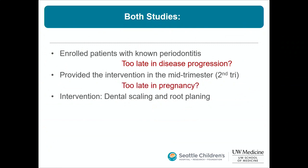Maybe intervention should have been in the first trimester, or even periconception — before pregnancy. Are there other treatment options? Dental scaling and root planing is pro-inflammatory; studies show increases in pro-inflammatory cytokines for potentially six months after the procedure. It may not be the best intervention for preventing preterm birth.